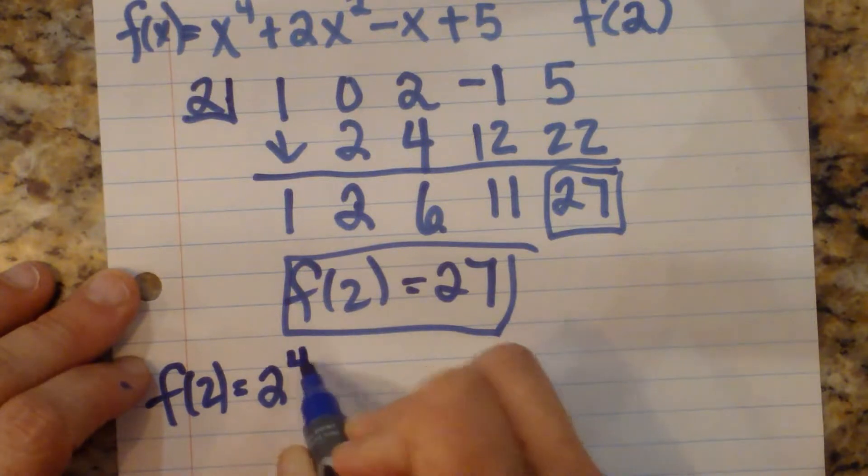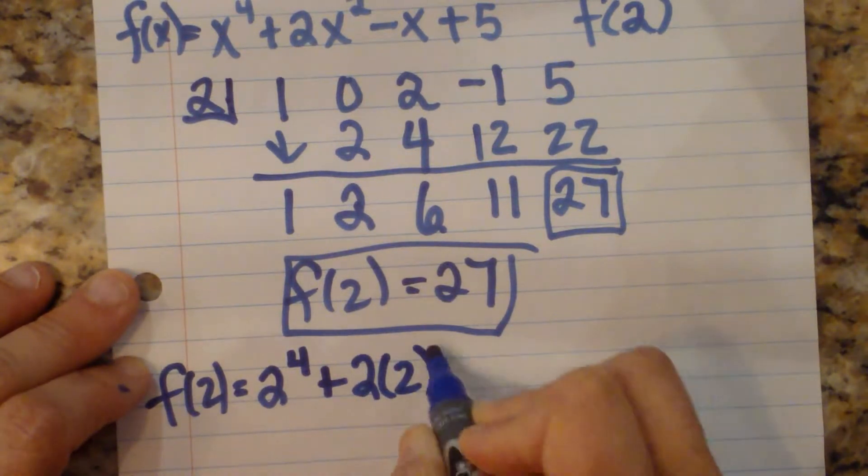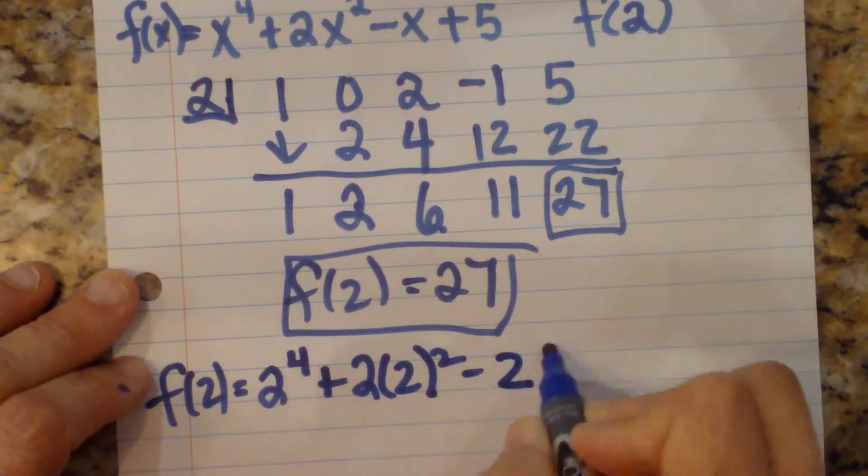So we're going to do 2 to the 4th plus 2 times 2 squared minus 2 plus 5.